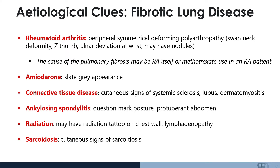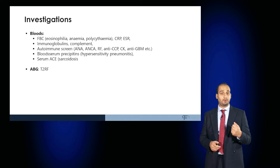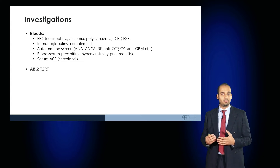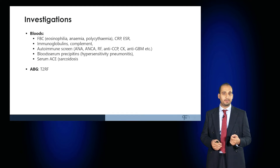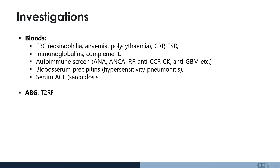Given these etiologies, a number of investigations are needed. Blood tests should look for eosinophilia, anaemia, polycythaemia on a full blood count, as well as CRP and ESR to assess for inflammatory and rheumatoid etiologies. Immunoglobulins, complement, and an autoimmune screen are particularly important, especially when thinking about lupus. Blood serum precipitins and serum ACE levels are helpful in sarcoidosis. An ABG is very important to determine whether the patient has type 1 or type 2 respiratory failure, with hypoxaemia expected in fibrotic lung disease.